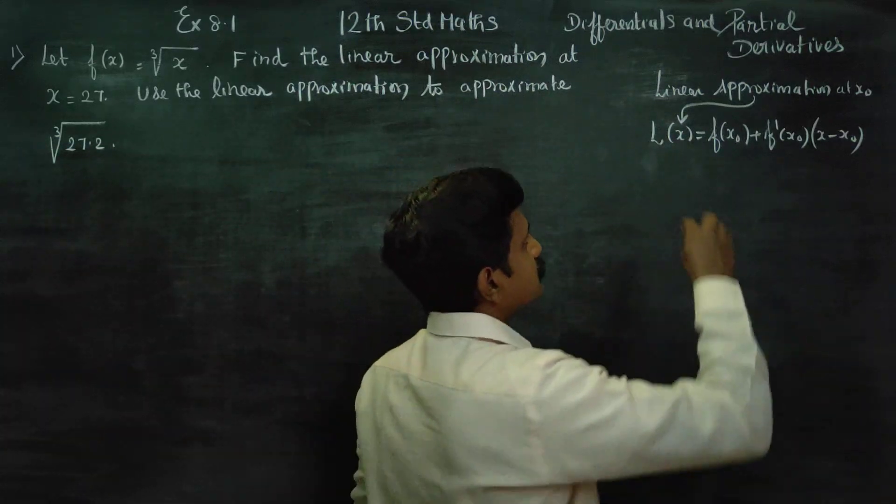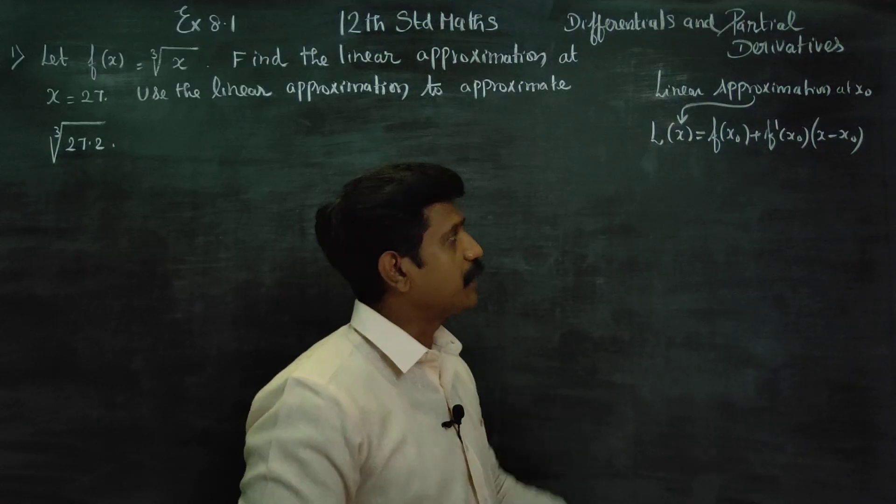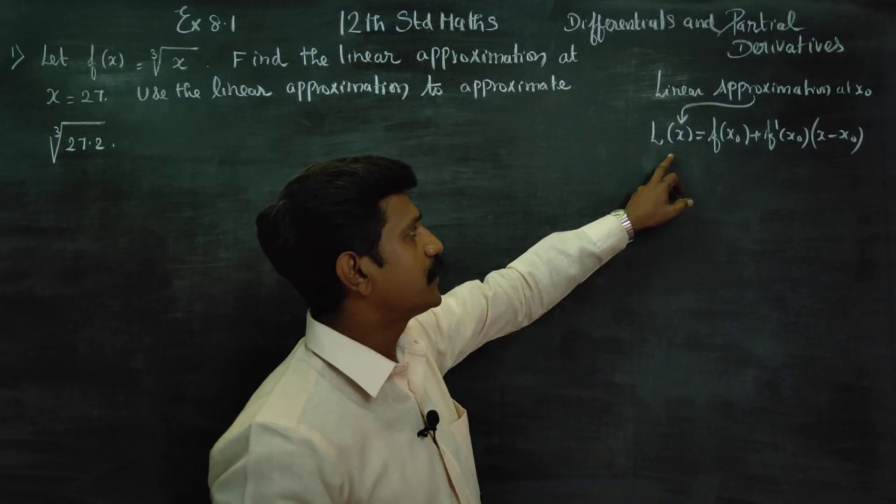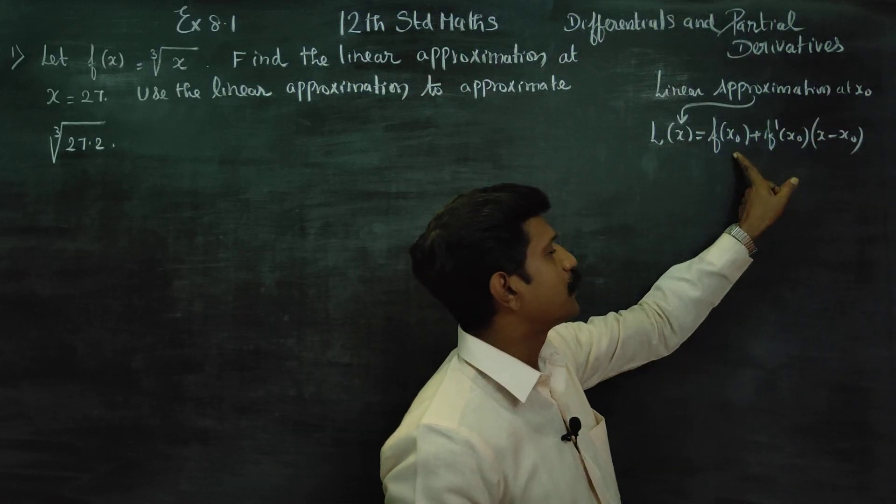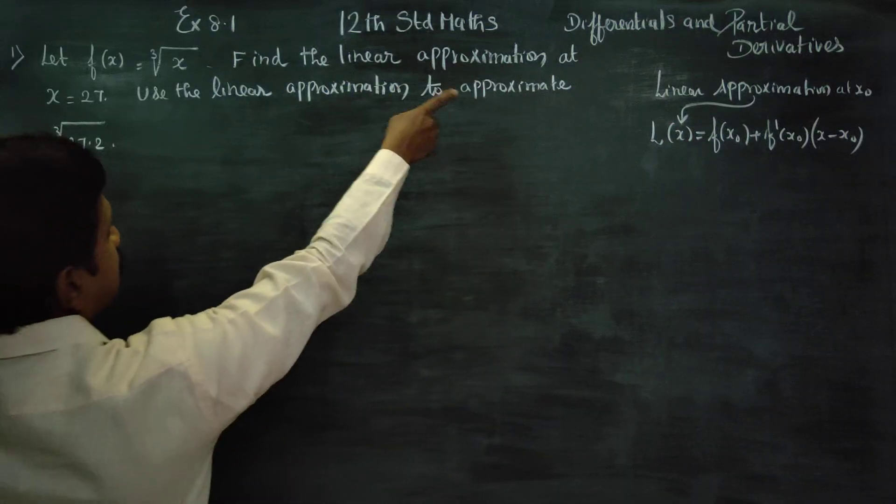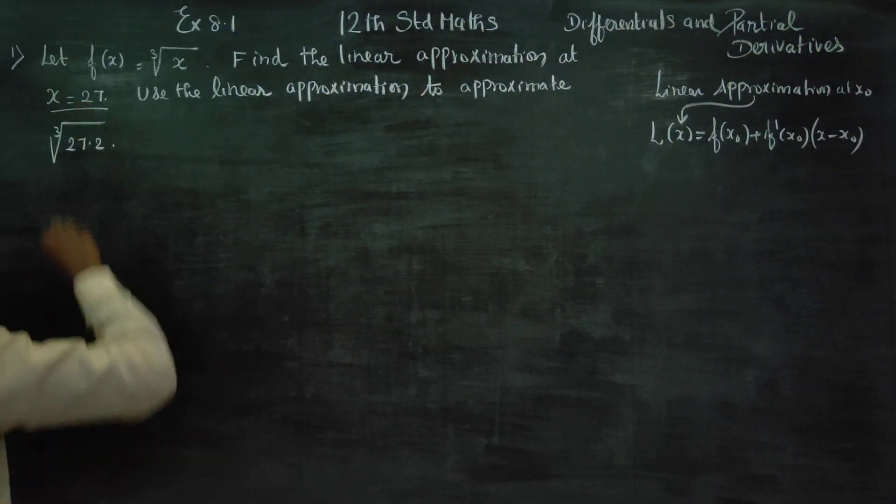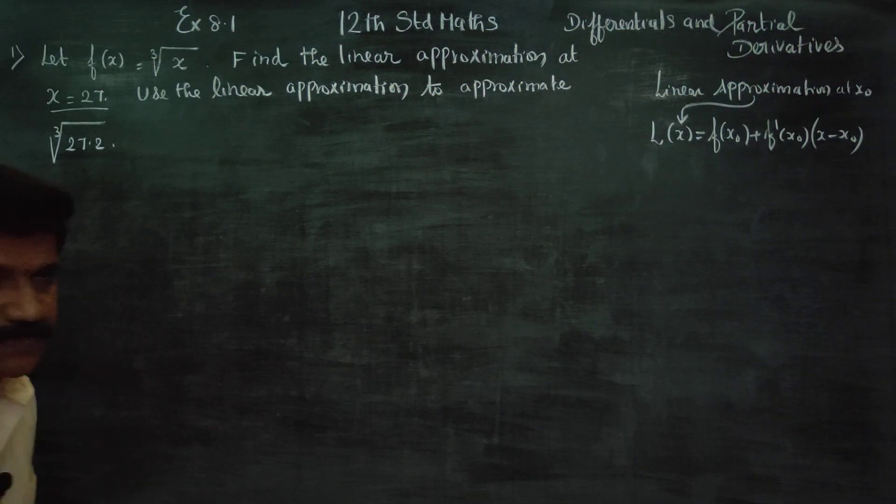Linear approximation at x0, this is the formula given for linear approximation of a single variable: L(x) equals f(x0) plus f'(x0) times (x minus x0). There are two questions here: find the linear approximation at x equals 27, then use it to find 27.2.